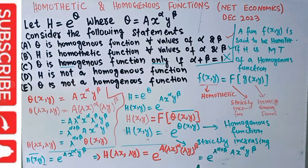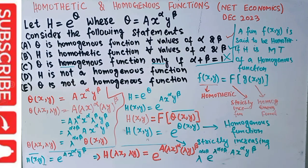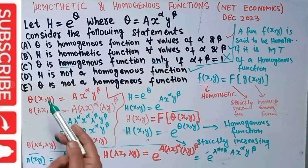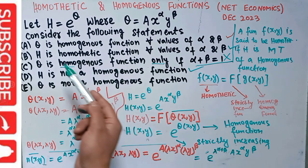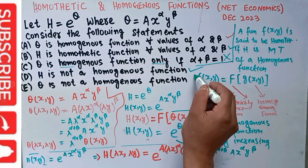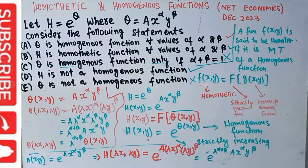Since λ appears in the exponent rather than as a coefficient, h is not homogeneous. This statement is correct. The last option says q is not a homogeneous function, but we proved in the first part that q is indeed a homogeneous function, so that option is incorrect. I hope I made myself clear in this video. Thank you.